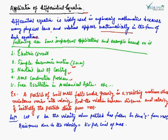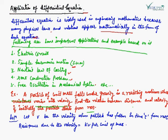Here we have taken an example based on a real-world application. The example is: a particle of unit mass falls under gravity in a resisting medium whose resistance varies with velocity. Find the relation between distance and velocity if initially the particle starts from rest.